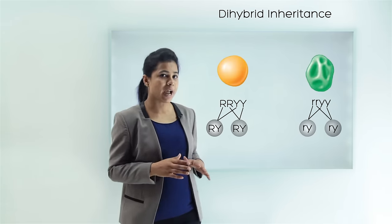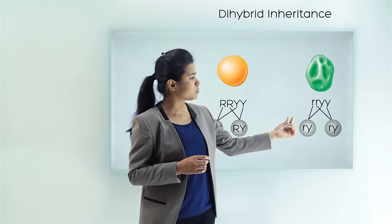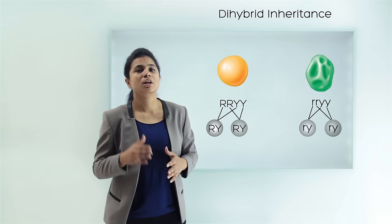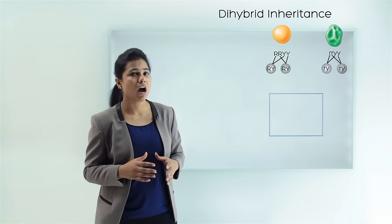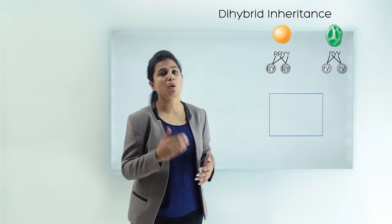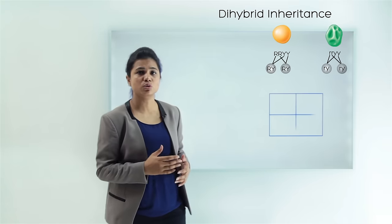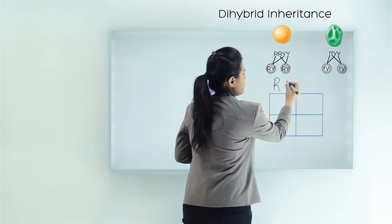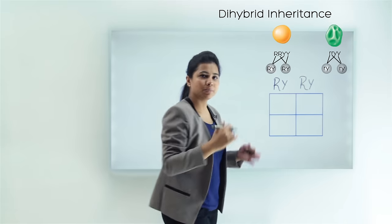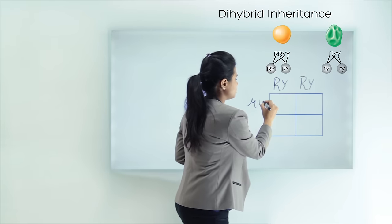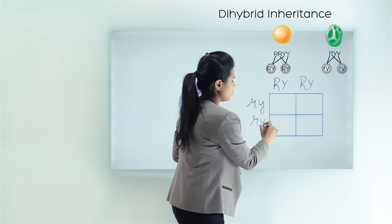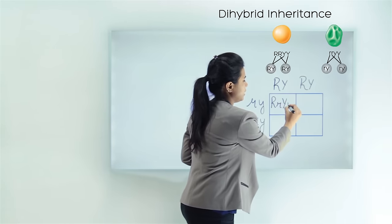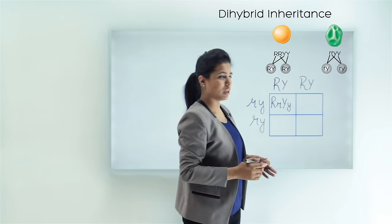Similarly, for the rryy plant, two gametes will be formed, each having small r and small y (ry). Now we have our gametes. Since there are two gametes from each parent, there will be two rows and two columns in the Punnett square. When we fuse them, all four cells will have the combination capital R, small r, capital Y, small y (RrYy).